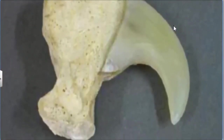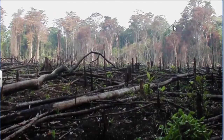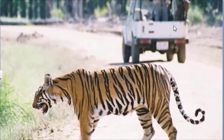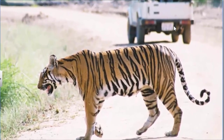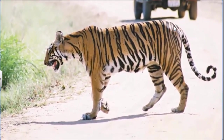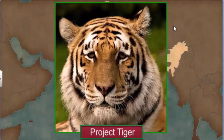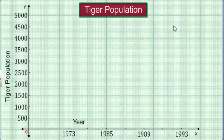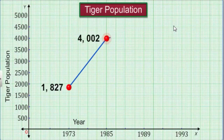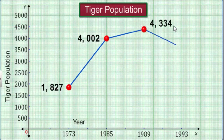Other reasons for the loss of tiger population include loss of natural habitat due to increasing human population and decline in the population of their natural prey. Project Tiger was launched in 1973 with the aim to protect and expand the tiger population through conservation methods. The results have been mixed — initially the population increased from 1,827 in 1973 to 4,002 in 1985 and 4,334 in 1989. However, by 1993 the tiger population had dropped to 3,600.